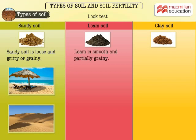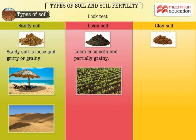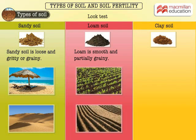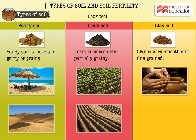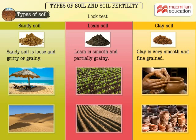Loam is smooth and partially grainy. We get to see this soil usually in agricultural fields. Clay is very smooth and fine-grained. You must have seen this being used by a potter.